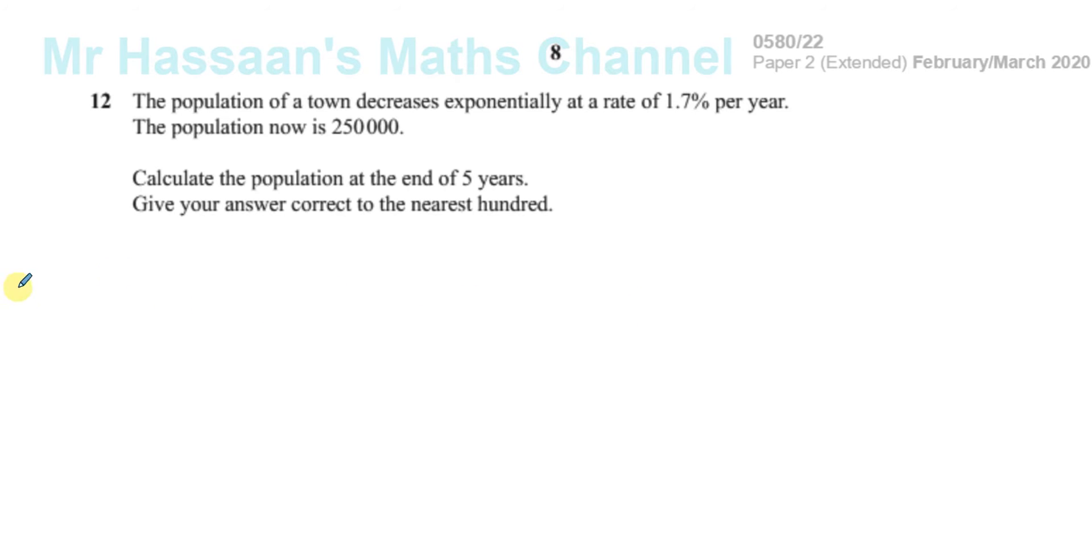Okay, many of the students learn, they memorize a formula, which is as follows: V equals... and they've got the original population, or the V means a new value, and P is like the amount at the moment.